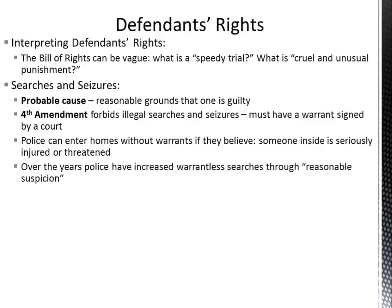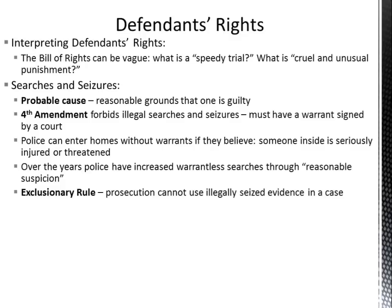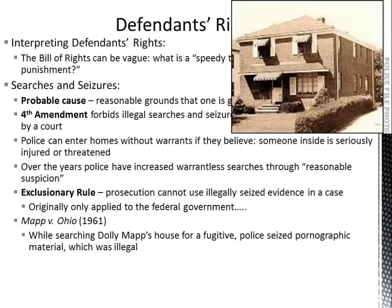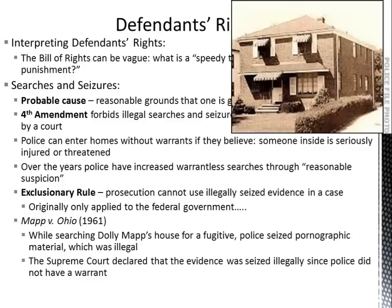Over the years, police have increased warrantless searches through reasonable suspicion, which has a lower standard than probable cause. The exclusionary rule says the prosecution cannot use illegally seized evidence in cases. Originally applied only to the federal government, it was extended to states through the incorporation doctrine and the 14th Amendment, as seen in Mapp v. Ohio. Dolly Mapp, living in Cleveland, Ohio, had police come into her house looking for a fugitive. While searching, they found pornographic material and arrested her for it. The Supreme Court declared the evidence illegally seized since police had no warrant for it.